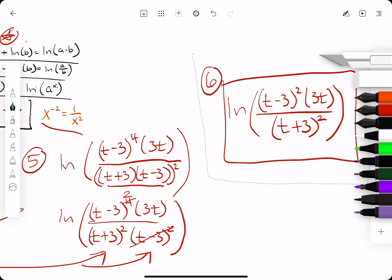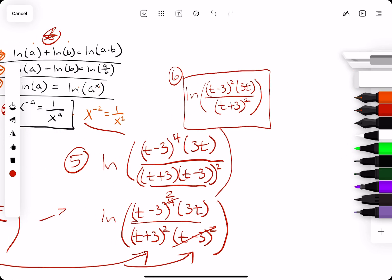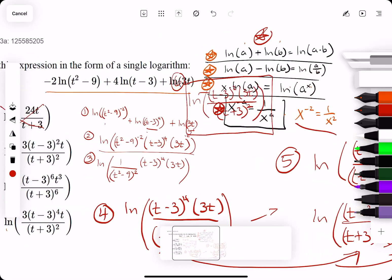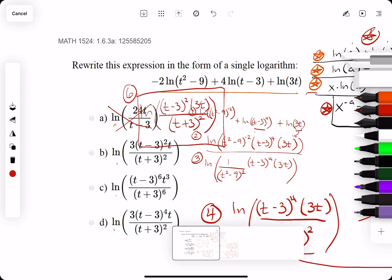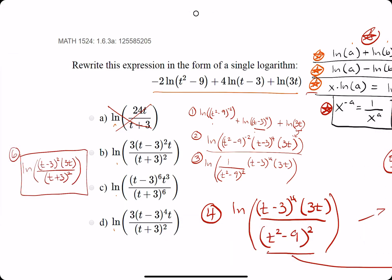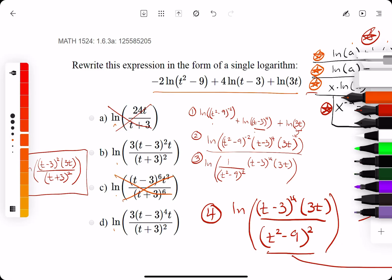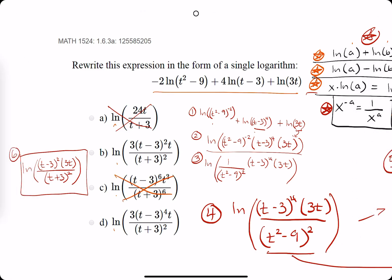I'm going to actually cut this out and bring it over here. Let's see if we can find which answer it matches from our choices here. Okie dokie. Clear this out a little bit. Alright, so we have t plus 3 squared on the bottom. So, that leaves us with, we can eliminate option C.